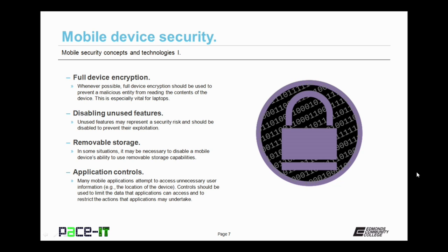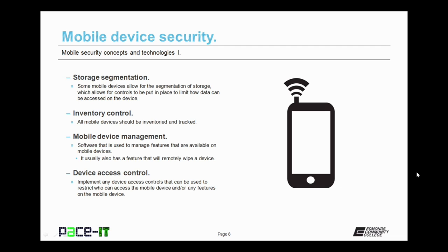Then there's storage segmentation. Some mobile devices allow for the segmentation of storage, which allows for controls to be put in place to limit how data can be accessed on the device. All organizations should implement inventory control, especially on mobile devices — all mobile devices should be inventoried and tracked. Then there's mobile device management, specialized software used to manage features available on mobile devices. MDM software will also usually have a feature that will remotely wipe a device when given a command, and implement device access controls to restrict who can access the mobile device or any features that do not comply with the organization's security policies.